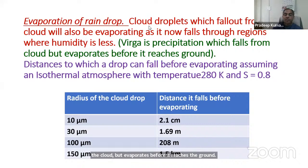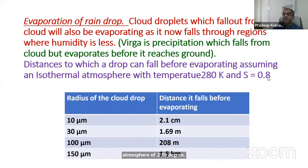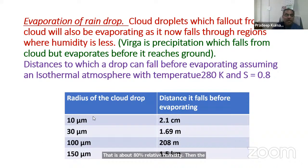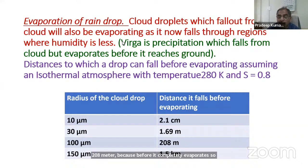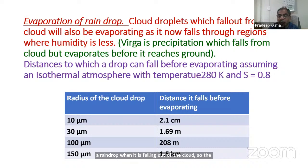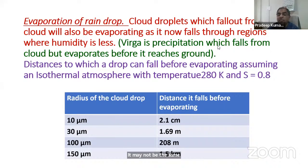As the cloud droplets fall out of the cloud, they evaporate. The drops which started from the cloud at whatever size will have a different size by the time they reach the ground — the size changes due to evaporation during the fall.